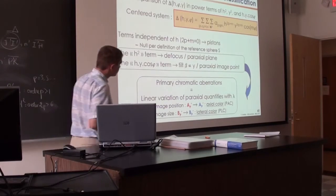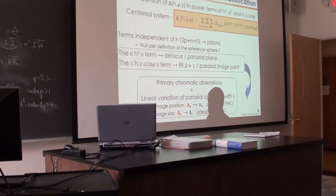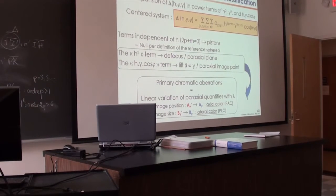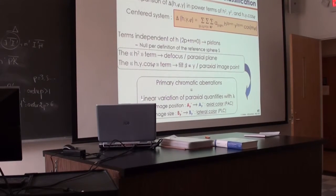To conclude this lecture, before we go to the geometrical aberrations and the other terms, I would like to mention the chromatic aberrations. Primary chromatic aberrations are, by definition, obtained by varying linearly the paraxial quantities with lambda. So you have two kinds: aberrations along the axis, and aberrations transversal.